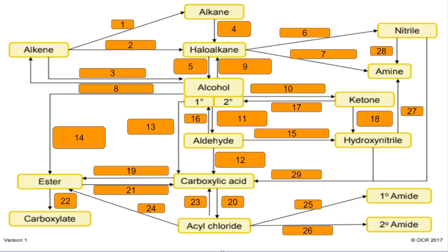Number one: alkene to alkane — hydrogen with a nickel catalyst, and you also need 150°C. Number two: alkene to haloalkane — react it with a hydrogen halide. Number three: alkene to alcohol — react the alkene with steam, so the temperature needs to be above 100°C, and you would use a phosphoric acid catalyst.